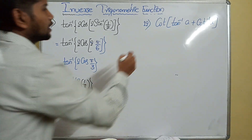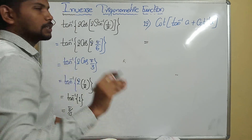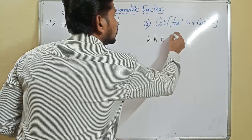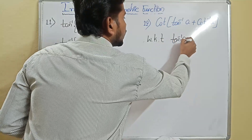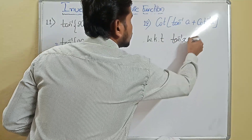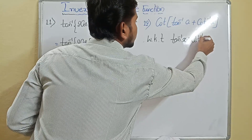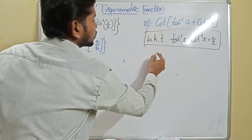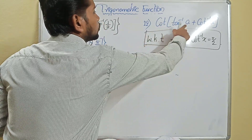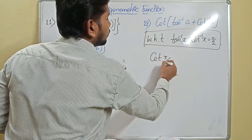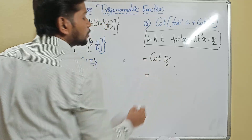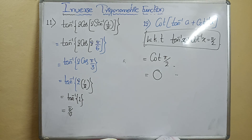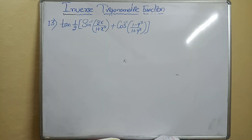In the similar manner, let's solve the next one. We know the property that tan inverse of x plus cot inverse of x is equal to pi by 2. That's why cot of (tan inverse of a plus cot inverse of a) is cot of pi by 2, and cot of pi by 2 equals 0.